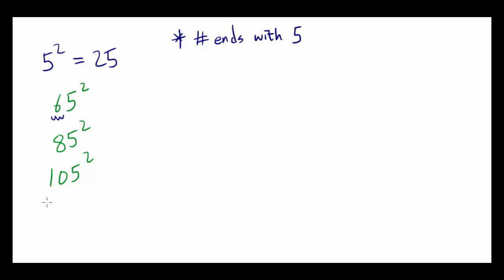Like 65, 85, 105, 95, and so on. So for 65, you're going to start by looking at the first digit, and you're going to multiply this number by a number 1 more than that number.